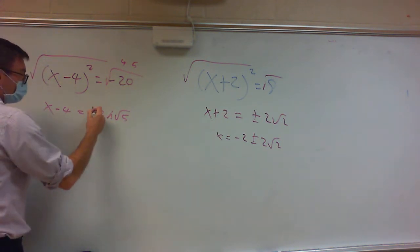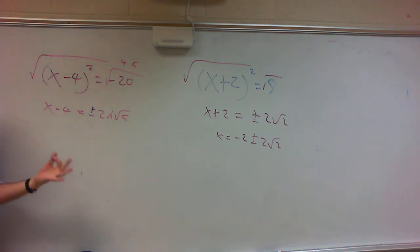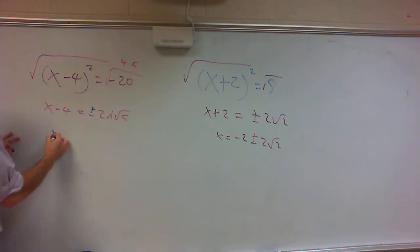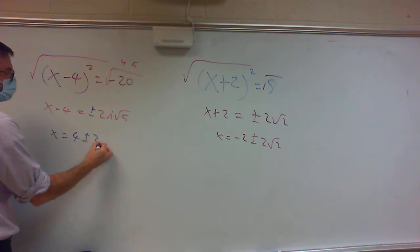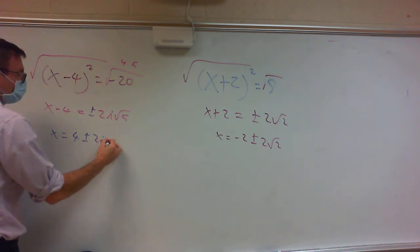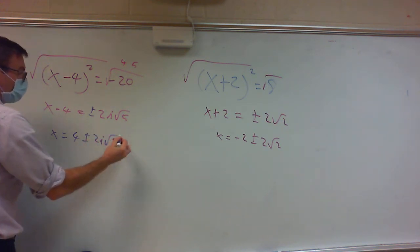Also, plus or minus, because any time you take the square root you've got to put plus or minus. So when you solve, we get x equals 4 plus or minus 2i square root of 5.